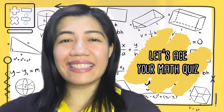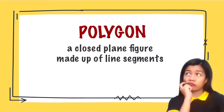Let's perfect our math skills. So a polygon refers to a closed plane figure made up of line segments. So first, we just have to remember: closed. A polygon is always closed. Next, a polygon is a plane figure — that's our second word to remember. And of course, it is made up of line segments — that's our third word.